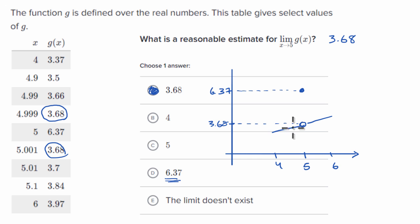I don't know for sure if this is what the graph looks like. Once again, we're just getting some sample points, but this would be a reasonable inference. And so you can see our limit, we are approaching 3.68 even though the value of the function is something different.